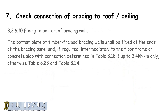For fixing to the floor, the timber framing code states that the bottom plate of a timber framed bracing wall shall be fixed at the ends of the bracing panel — and if required, immediately to the floor frame or concrete slab — with connections determined from table 8.18, which goes up to 3.4 kilonewtons per metre.